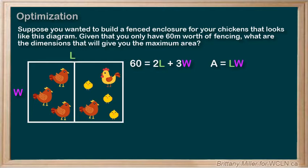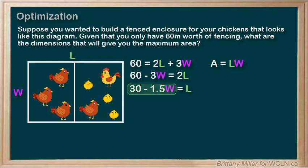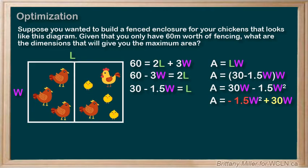This allows us to solve the constraint equation for L and then substitute what we find into the area function so that we only have one variable to worry about. So let's do some algebra: 60 minus 3W equals 2L, so 30 minus 1.5W equals L. If L equals 30 minus 1.5W, then A equals that times W. Expanding gives A equals 30W minus 1.5W squared, and rearranging gives A equals negative 1.5W squared plus 30W. This is a quadratic in general form.